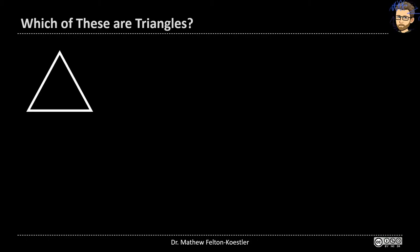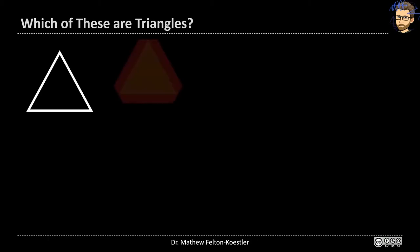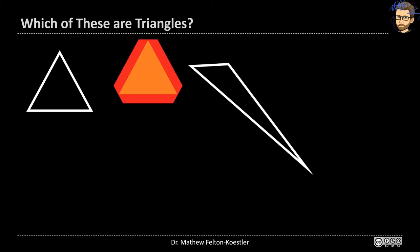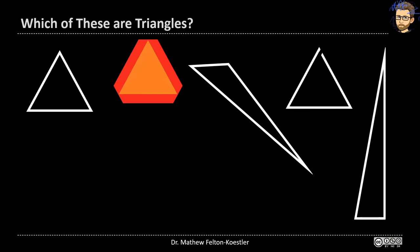Surely that one is. We've all seen that. That's the triangle we've seen throughout school. What about this that we might see on a slow-moving vehicle? Or this weird slanted thing? Or how about this triangle with just a little piece missing? Or this tall pointy one?